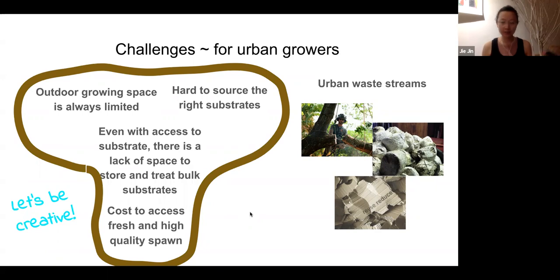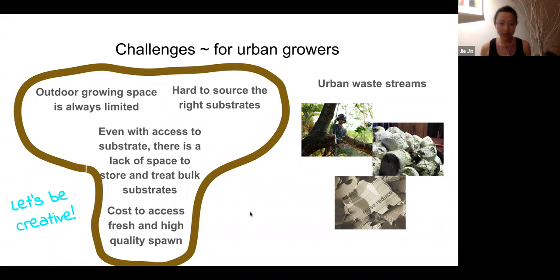Because we don't have space to treat or store substrates, can we find types of substrate that allow us to grow without a long or complicated process? Because of the cost to access fresh, high-quality spawn, are there ways for us to make our own? Liquid culture is one way to clone and make spawn from very accessible materials. What are other ways? And from the waste streams — can someone's waste become our opportunity?